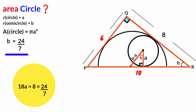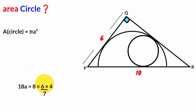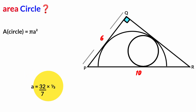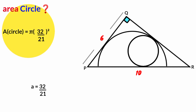Recalling that B = 24/7: 18A = 8 × (24/7). Since 24 = 6×4 and 18 = 6×3, the 6s cancel, giving 3A = 32/7. Multiplying both sides by 1/3: A = 32/21. Substituting back: area of circle = π × (32/21)² = π × 1024/441. So the area of the circle equals 1024π/441 square units.